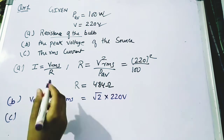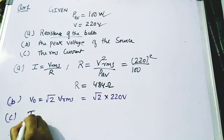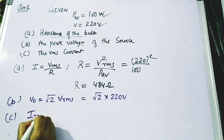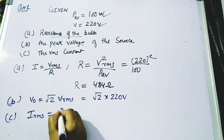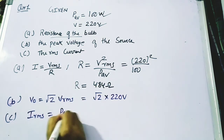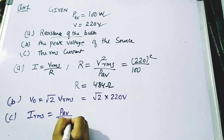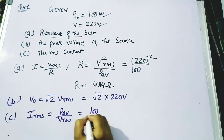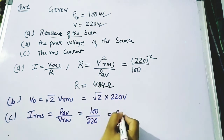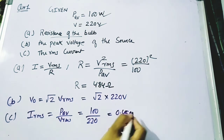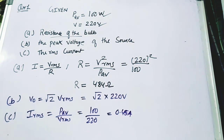The third part is the RMS value of the current. Using the formula I_RMS = P_average / V_RMS = 100 / 220, we get approximately 0.45 ampere. This is the answer for the RMS current. This completes the problem related to power.